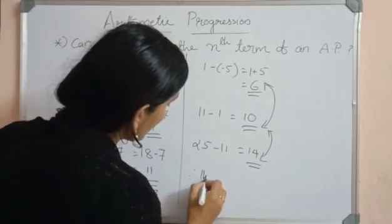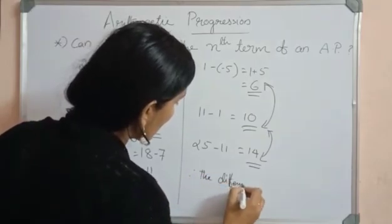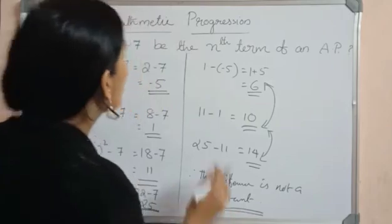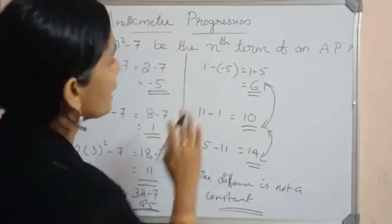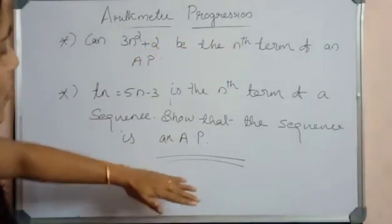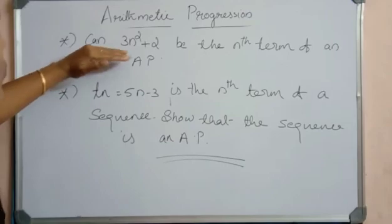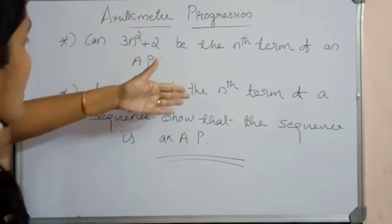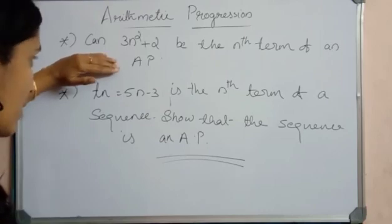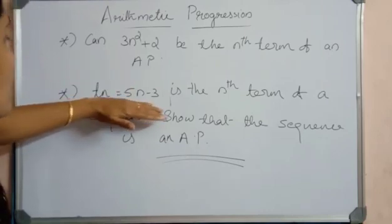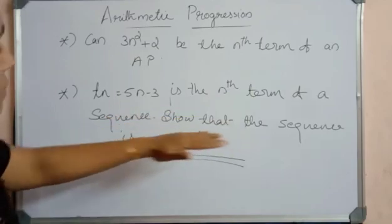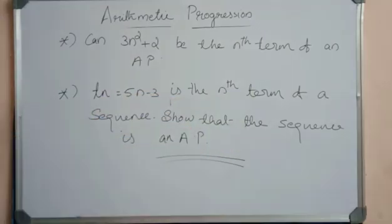Since the difference is not a constant, 2n² − 7 cannot be the nth term of an AP. Now try these questions yourself: can 3n² + 2 be the nth term of an AP? Also, show that Tn = 5n − 3 is an AP using the same method. That's all for today — let's meet in the next class with a different topic. Thank you.